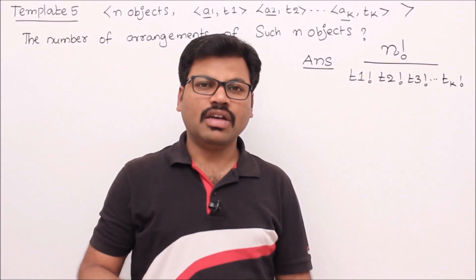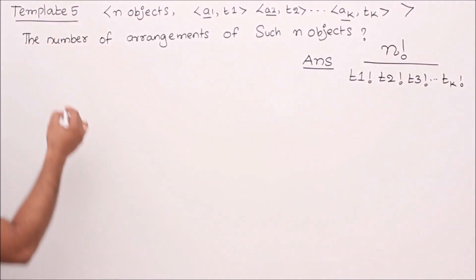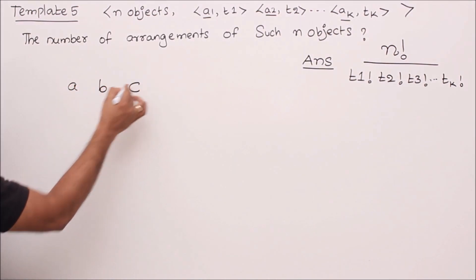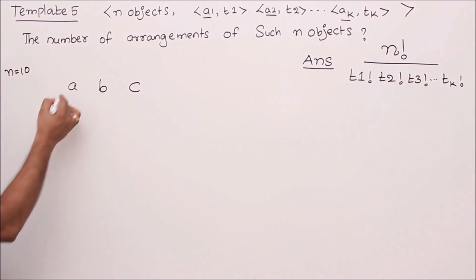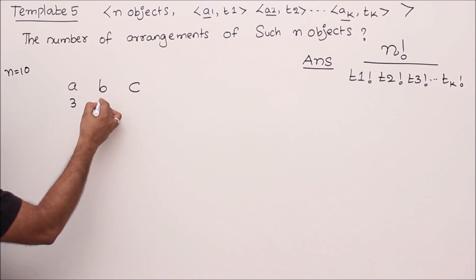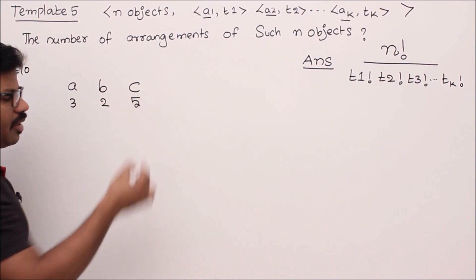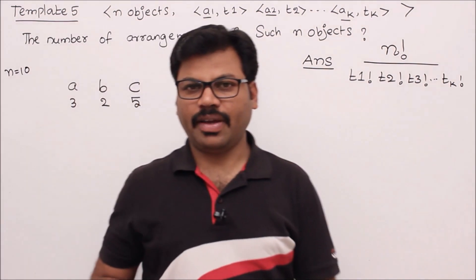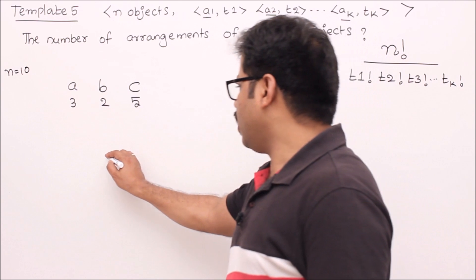To see how, I take three object types: a, b, and c, with n equal to 10. That means there are 10 objects total. Object a is repeated 3 times, object b is repeated 2 times, and object c is repeated 5 times. These numbers are chosen randomly. Now, how many different ways can you arrange them in a line?